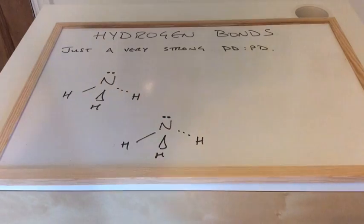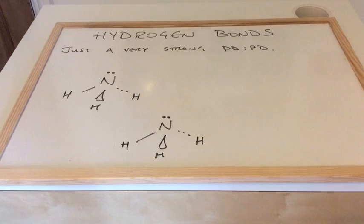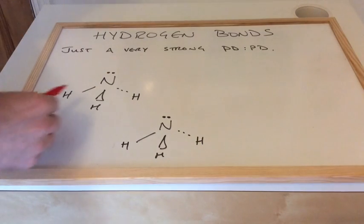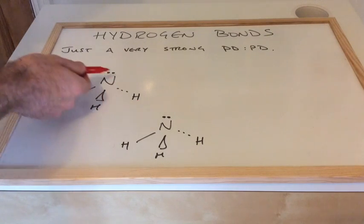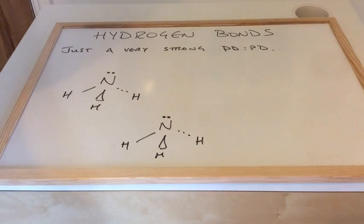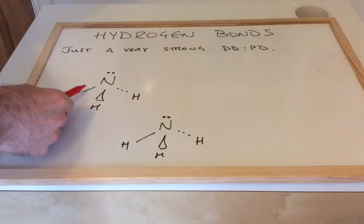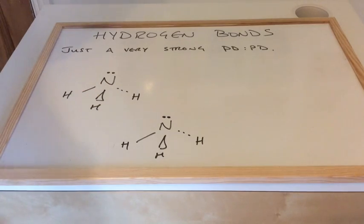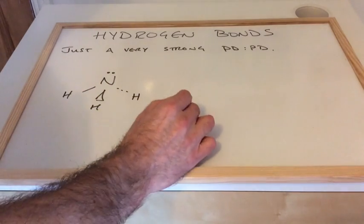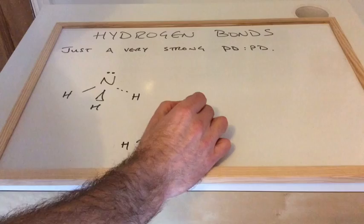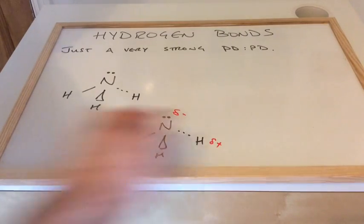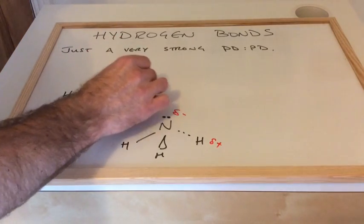The classic example for an NH bond in the molecule is ammonia. So we've got two ammonia molecules, we've got the lone pair shown on the nitrogen. Remember it's got five outer electrons, three are used to bond to these three hydrogens. We'll just pop the dipoles on. Nitrogen is the more electronegative atom.